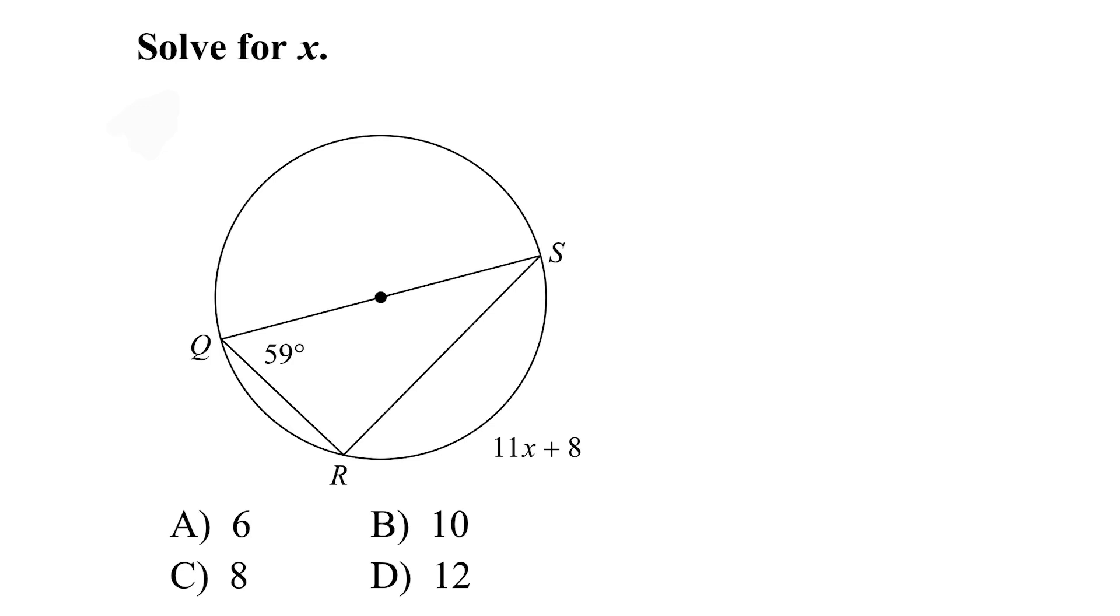Hey, can you solve this one for x? Well, it depends. You have to know a little something about inscribed angles. Inscribed angles have their vertex on the circle, so this 59 is an inscribed angle.